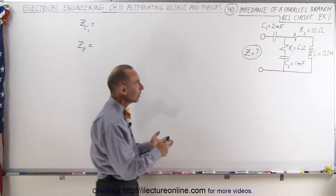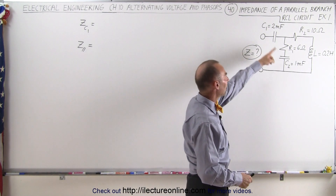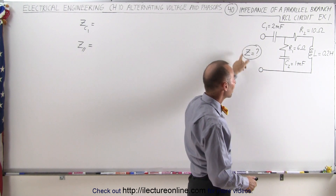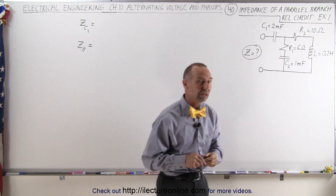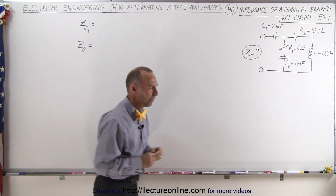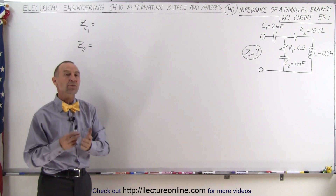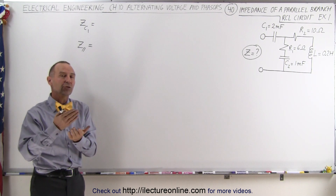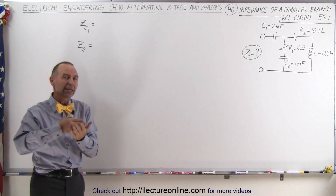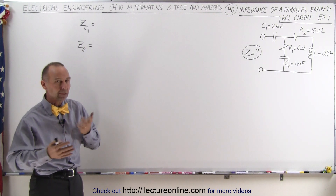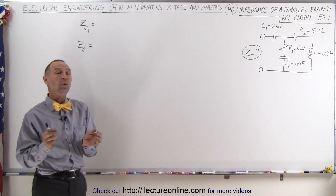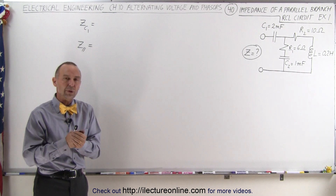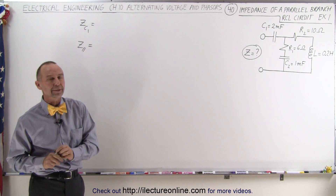So here we have a parallel branch circuit that has capacitors, an inductor, some resistors, and we're trying to find the total impedance of that circuit. Now there are various ways in which we can do that. We can use the format where we write everything in terms of the real and imaginary parts and then add, subtract, multiply, divide these things, or we can go ahead and convert into what we call the magnitude and the phase angle.